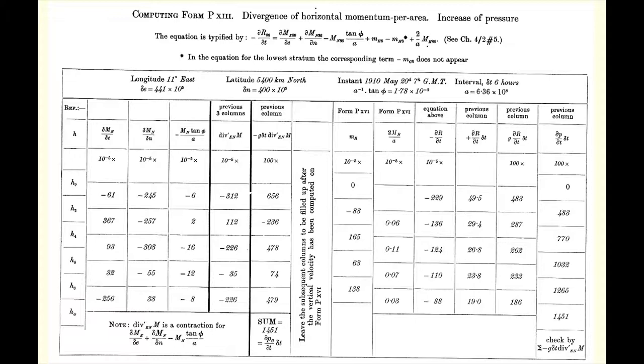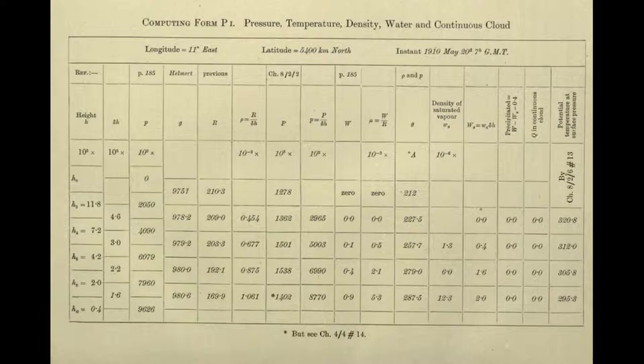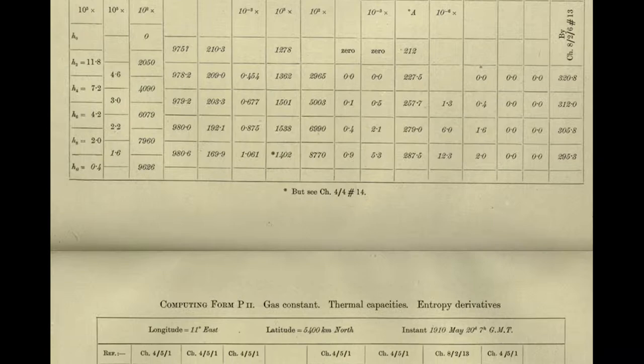It took him six weeks to compute a six-hour forecast. Though his math was correct, the forecast was terrible — off by a factor of 100 — due to problems with his numerical approach and small-scale atmospheric oscillations called gravity waves that he did not account for.